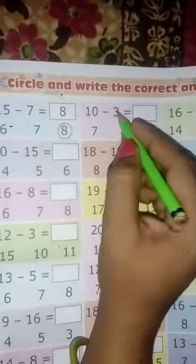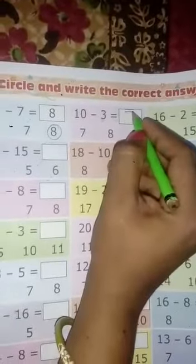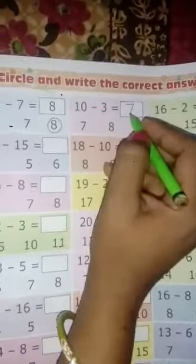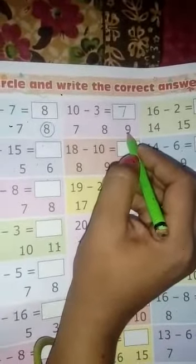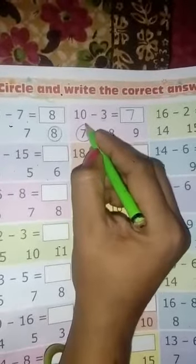Next, 10 minus 3 equal to 7. 10 mein se agar 3 chala jayega, to how many left? 7. Who is the right answer? 7, 8, 9. Teeno mein se answer kaun sa right hai? 7 right hai, chaliye 7 ko hum circle kar dete hain.